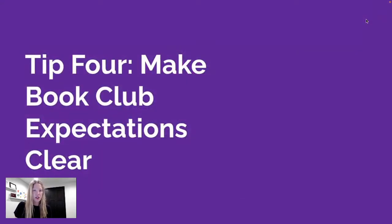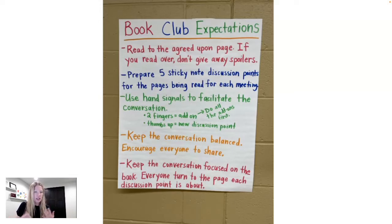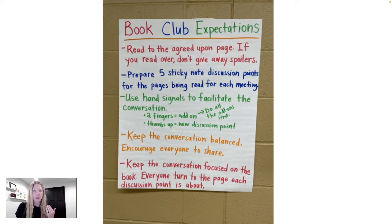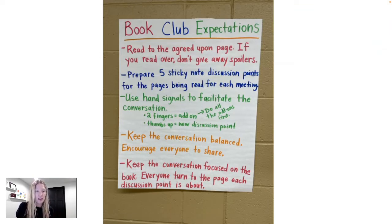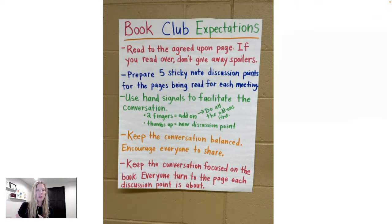My next suggestion — tip four — is to make book club expectations extremely clear. This is an anchor chart I constructed with students. Some examples: read to the agreed-upon page; if you read over, don't give spoilers; be prepared by bringing five sticky note discussions; use the hand signals; keep the conversation balanced by politely encouraging quieter students to contribute and being mindful if one student is overpowering the discussion; and keep the conversation focused on the book. The page number on sticky notes helps keep everyone anchored in the text and prevents going off on tangents.